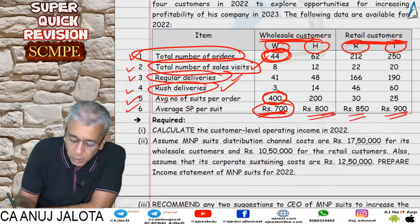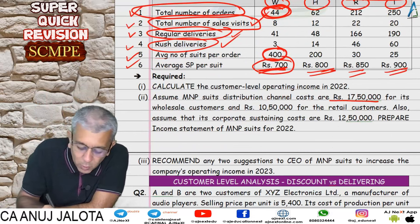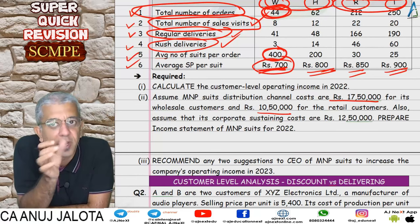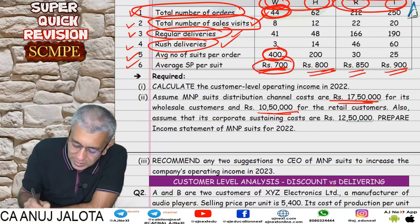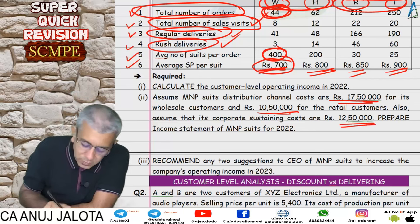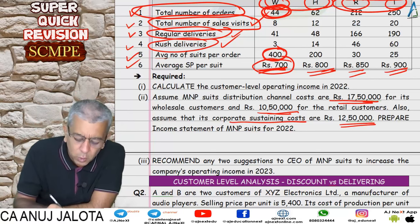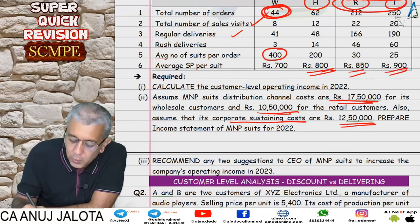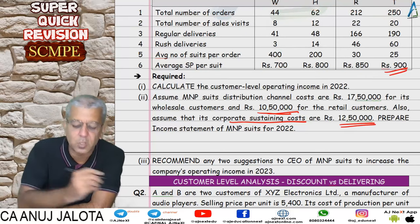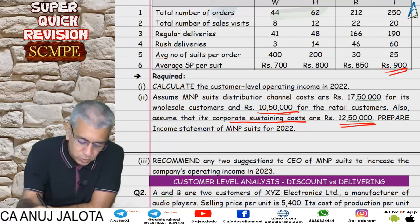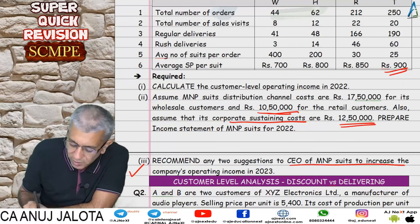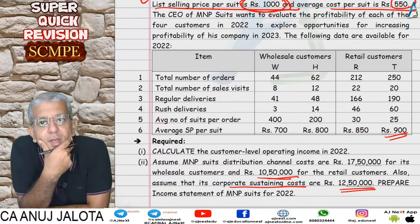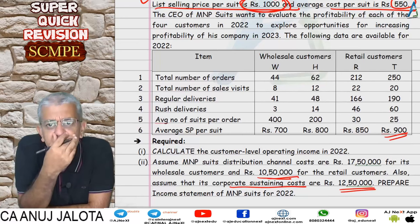Part two introduced extra costs: some costs for WNH combined, some for RNT combined. We clubbed the profits of WNH, clubbed profits of RNT, and subtracted those combined costs. Then there was a corporate sustaining cost for the entire company — we clubbed all customer profits and subtracted the 12.5 lakh rupees corporate sustaining cost to get the overall company profit.